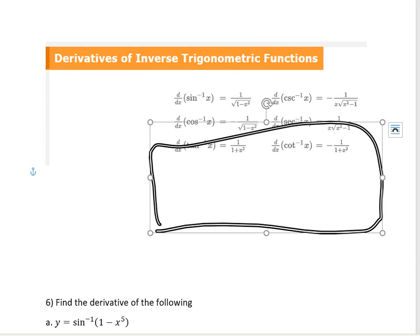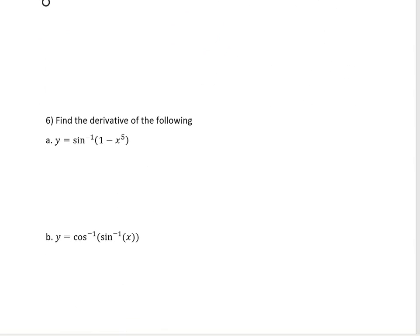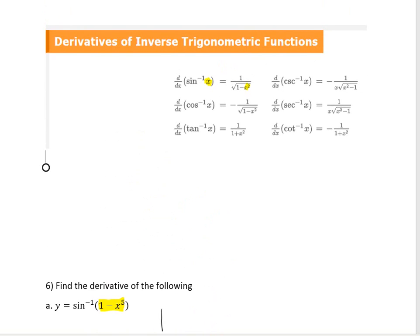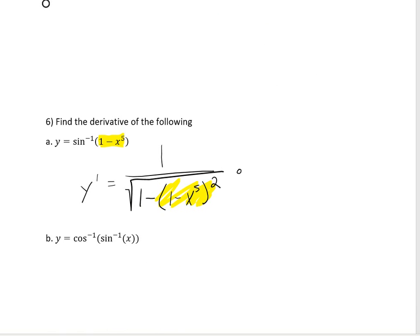One key thing to remember: sine inverse of the input gives 1 divided by the square root of 1 minus that input squared. So for example, if we want to find the derivative of y equals sine inverse of 1 minus x to the 5th, then the input is 1 minus x to the 5th. My derivative is 1 divided by the square root of 1 minus that input squared. Because it's another function, I still need to multiply by the derivative of the inside, which is negative 5x to the 4th.